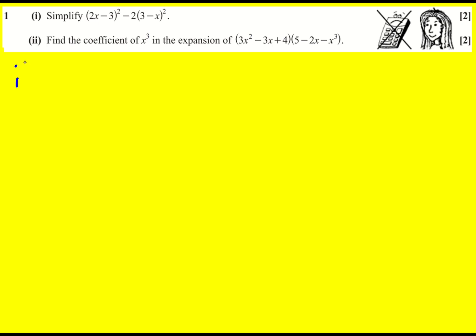Let's get simplifying. In this question, we can write the first brackets as 2x minus 3 times 2x minus 3, and then we're minusing 2 times 3 minus x, 3 minus x.